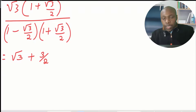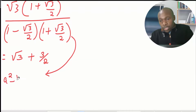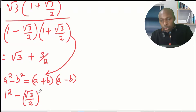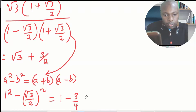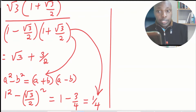For the denominator, 1 minus root 3 over 2 multiplied by 1 plus root 3 over 2 is the difference of two squares. Recalling that a squared minus b squared equals a minus b times a plus b, this simplifies to 1 squared minus (root 3 over 2) squared, which gives 1 minus 3 over 4, and that equals a quarter.